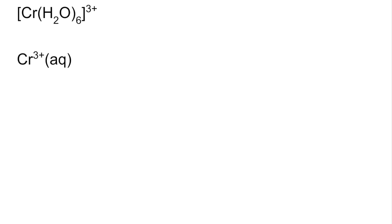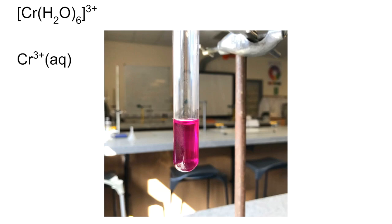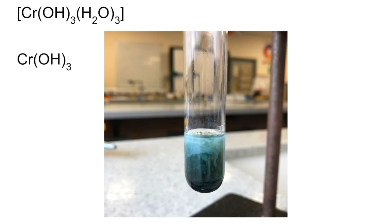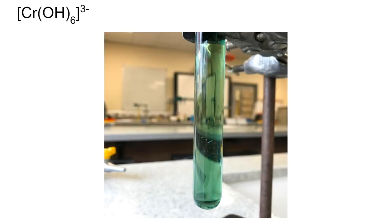Aqueous Cr3+ is a violet solution. Chromium 3 hydroxide is a gray-green precipitate. If you add excess hydroxide ions, that gray-green precipitate dissolves and it gives this complex ion which is a green solution.